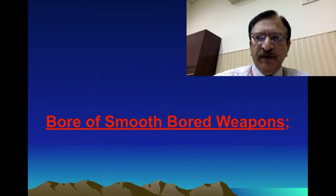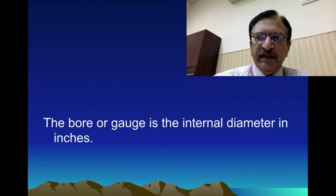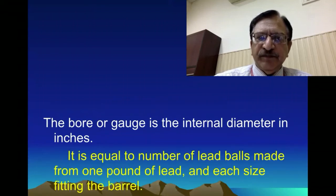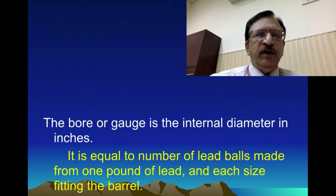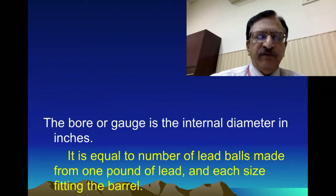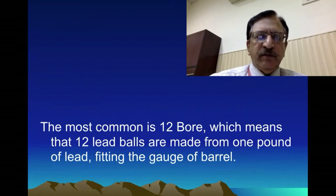The bore of a smooth-bored weapon is determined by a peculiar characteristic phenomenon. The bore or gauge is the internal diameter in inches and is equal to the number of lead balls made from one pound of lead, each ball fitting the barrel. The most common example is the 12 bore, which means 12 lead pellets have been made from one pound of lead with each ball fitting the gauge.